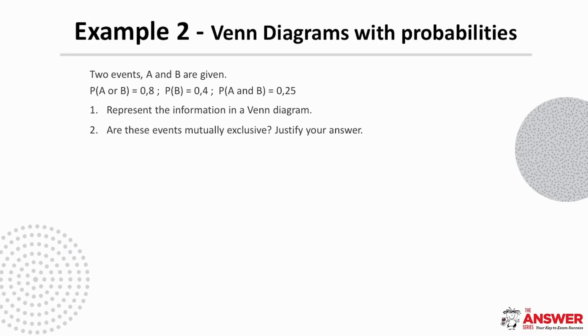Example 2 is an example with probabilities. We are first being asked to represent the given probabilities in a Venn diagram. Then we're being asked whether these events are mutually exclusive. First let's see what information they have given us. Probability of A or B is 0.8. The probability of B is 0.4 and the probability of A and B is 0.25.